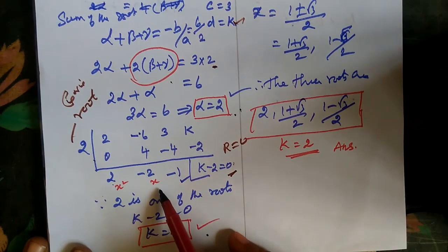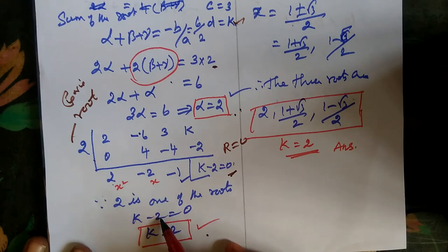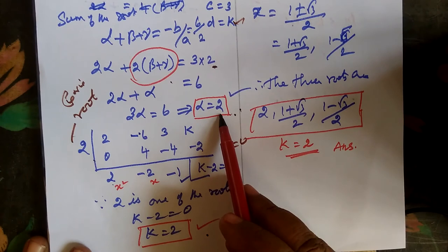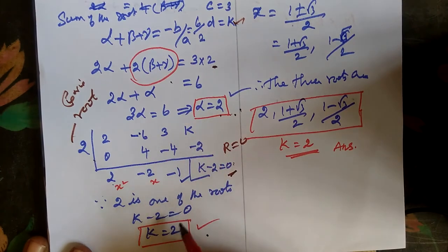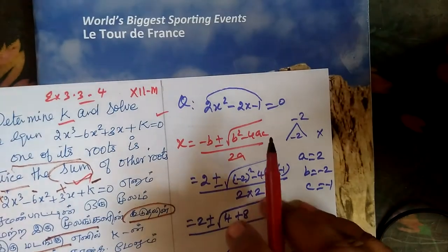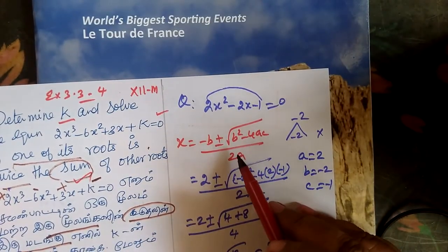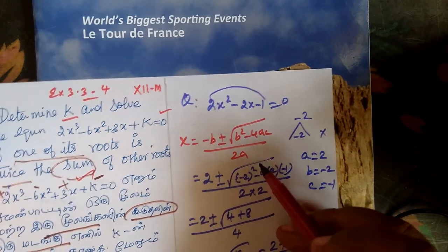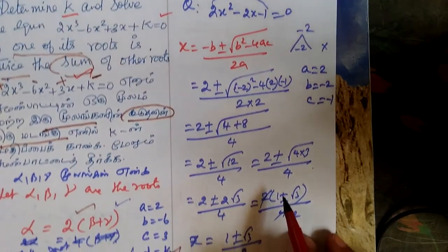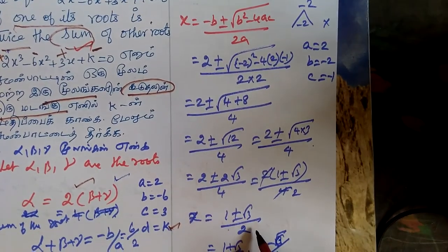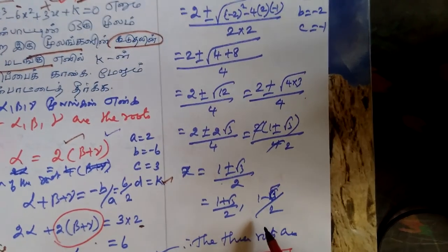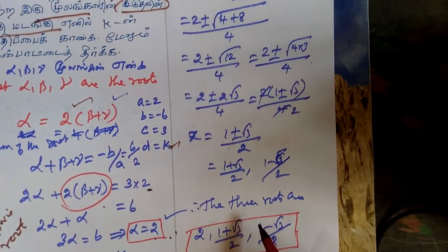Now the cubic equation is reduced to a quadratic equation. We have two remaining roots. Using the quadratic formula, we get (1 + √3)/2 and (1 - √3)/2.